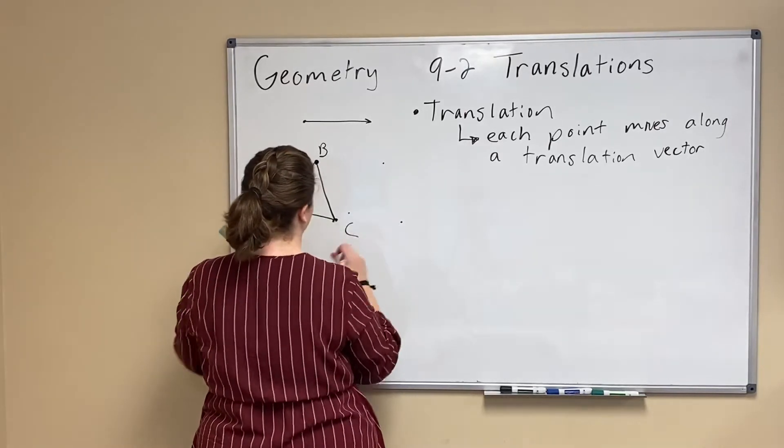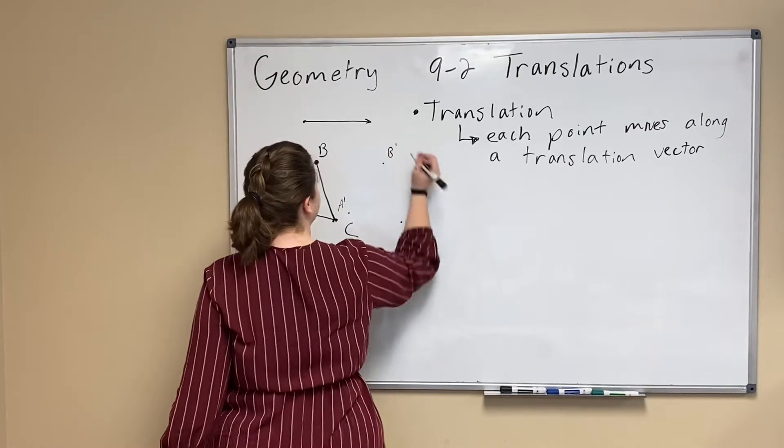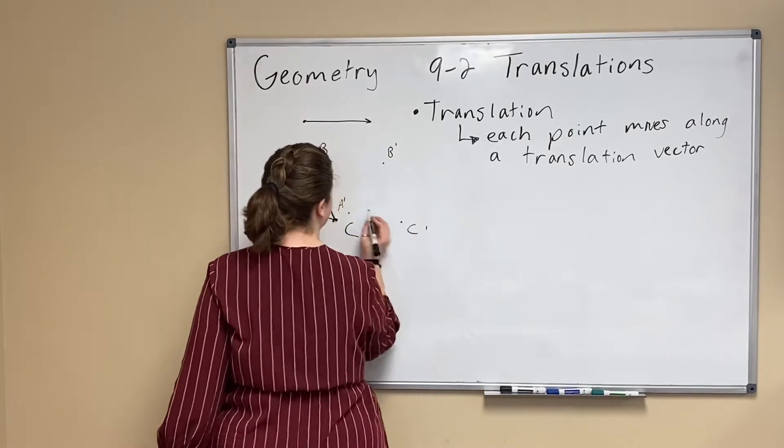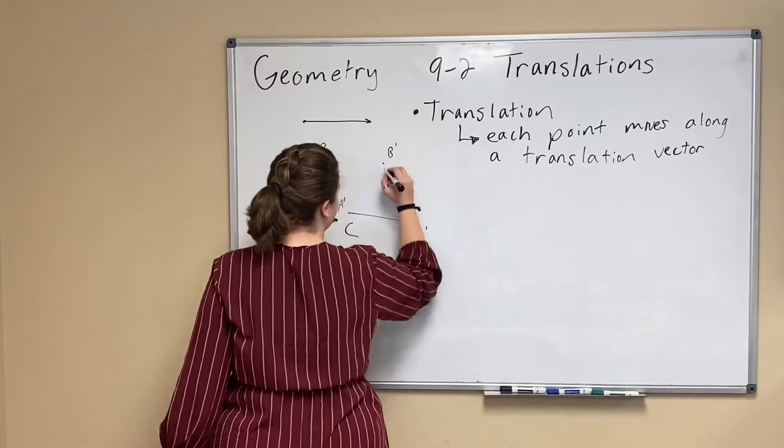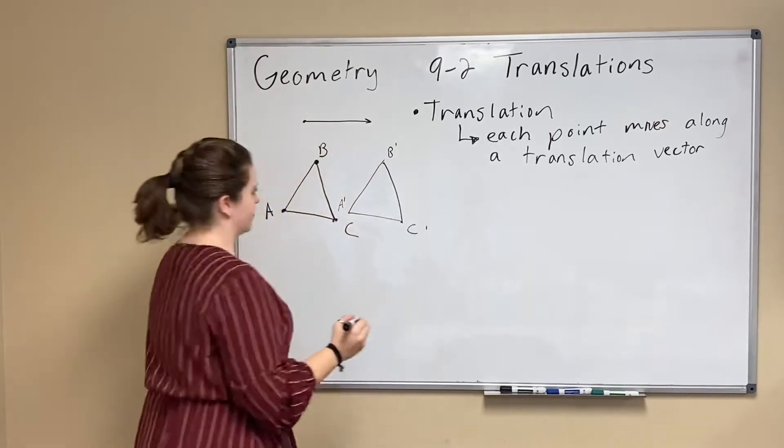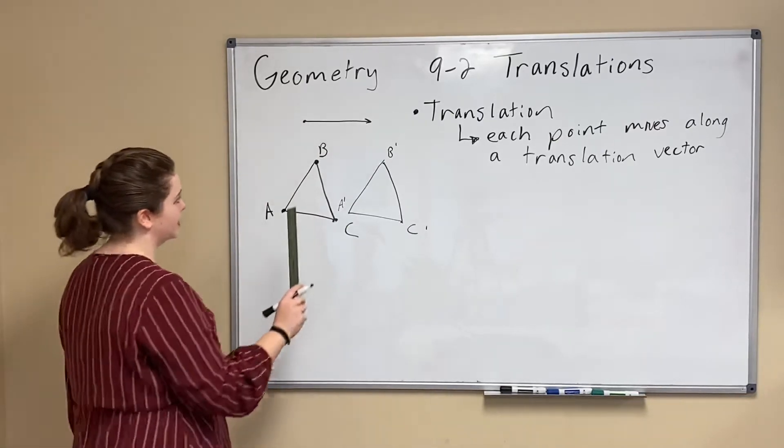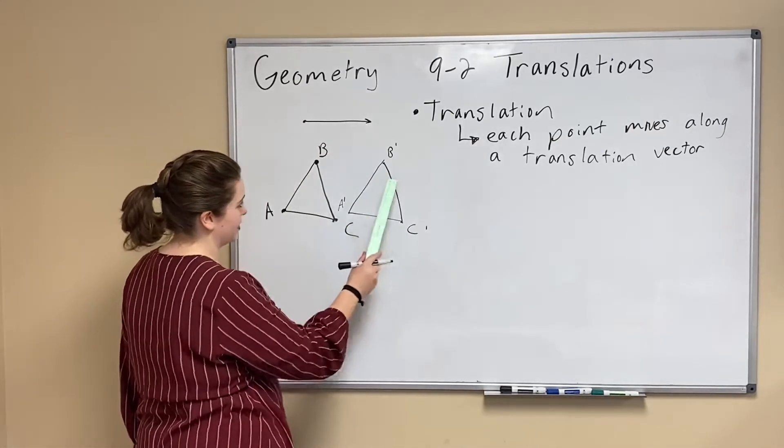Then I'm going to move A trying my best to keep it parallel so we're going in the same direction seven and a half. This is going to be our A prime, our B prime, and our C prime. Then we'll connect our dots and this is what our new figure looks like translated seven and a half inches in this direction.